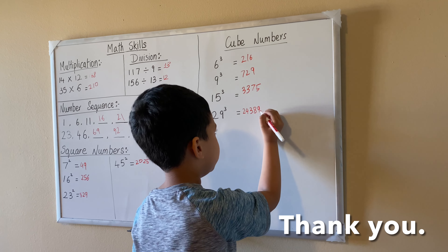Let's start with multiplication. 14 times 12 equals 168. 13 times 16 equals 210.